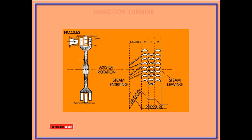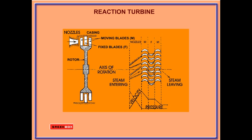A reaction turbine consists of a wheel or rotor, casing, and fixed and moving blades. Equal numbers of fixed and moving blades are attached alternately to the casing and the wheel respectively. The fixed blade is similar to a nozzle, where velocity increases with a decrease of pressure.